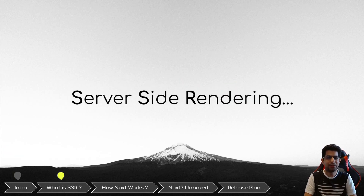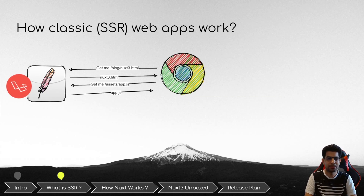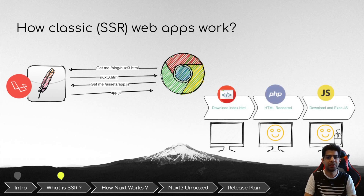So first, let's see what server-side rendering is and why it should be important for us. Basically, most of the websites that we use and visit every day are server-side rendered applications. The way these websites work is that when we enter a URL, the browser sends a request to the server, which simply processes the request and then generates the markup necessary to display the content. This content is then sent back to the browser, and the browser can immediately display the content to the user.